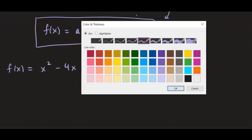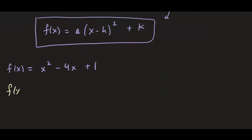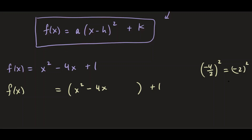I'm going to rewrite the function. I have f(x) and I'm going to group x² - 4x into a parenthesis and leave the constant term alone. Now complete the square: take half of the linear term, which is -4, so half of -4 is -2, and square it to get 4. We add 4 inside the parenthesis and also add 4 to the left side of the equation.